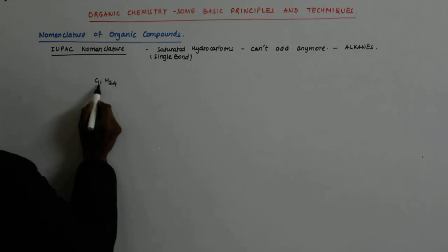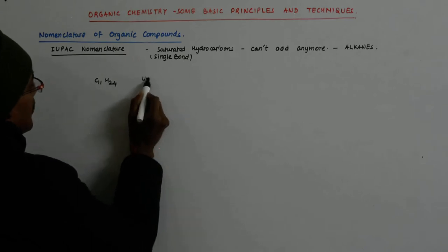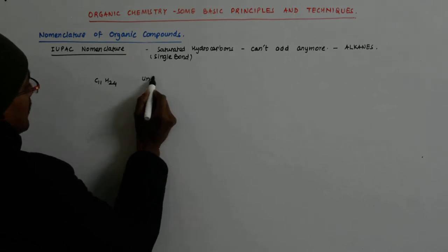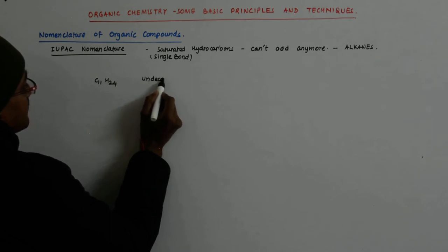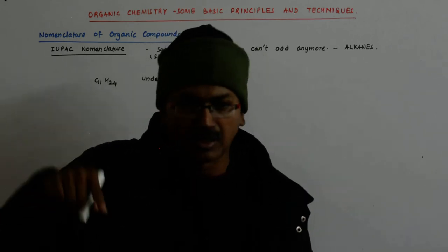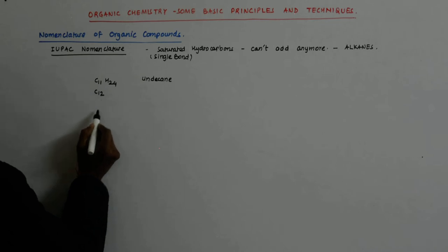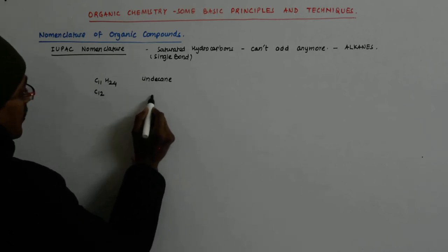So what happens? This becomes undecane. Okay, un is uni, uni is 1, right? So 11 is that. 12 is, this will be there, okay?